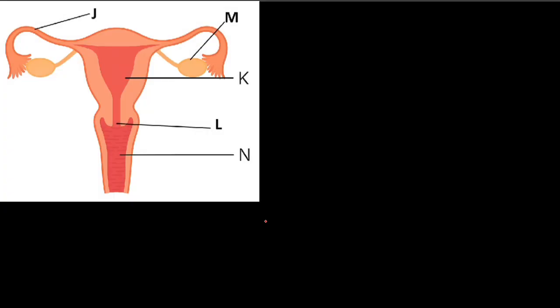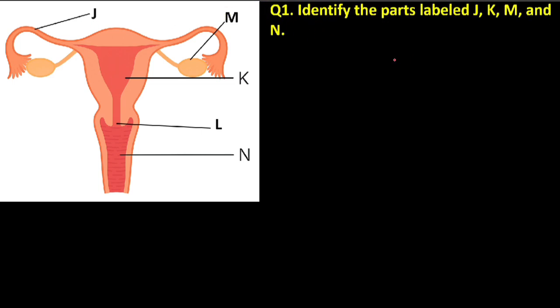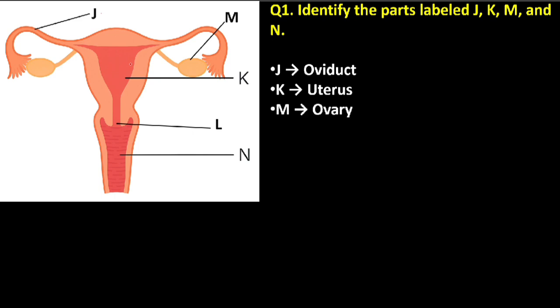Here we have the female reproductive system. The first question: identify the parts labeled J, K, M, and N. J is known as the oviduct or the fallopian tube. K is known as the uterus or the womb. M is known as the ovary. L is known as the cervix. N is pointing here — let us know in the comment section what is the name of the part labeled N.